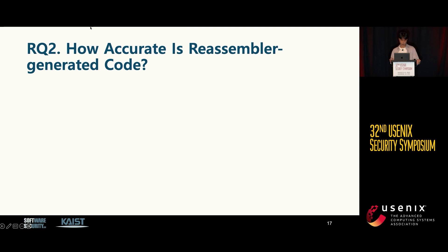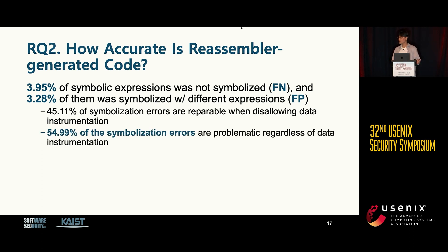RQ2: how accurate is reassembler-generated code? Reassessor detected diverse symbolization errors from reassembler-generated code. We observed that the reassembly tools failed to recognize over 3% of symbol expressions, which we classify as false negatives. Additionally, more than 3% of cross-references used a different symbol expression for symbolization, which we classify as false positives. Moreover, about 45% of symbolization errors were reparable when disallowing data instrumentation, while the other 54% of symbolization errors can be problematic regardless of data instrumentation. Fixing the data layout can be a practical heuristic.